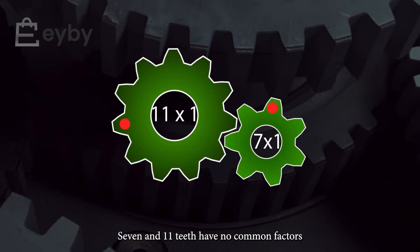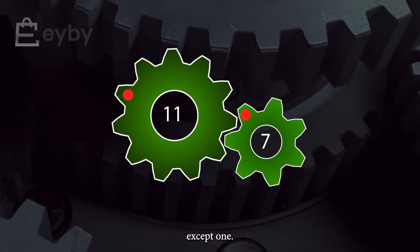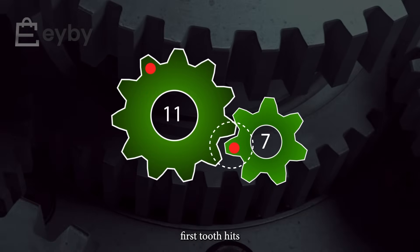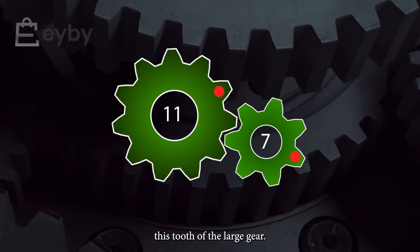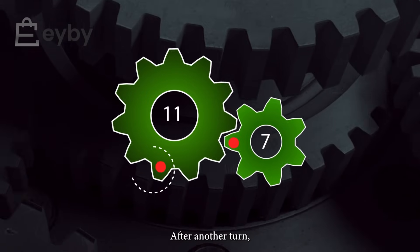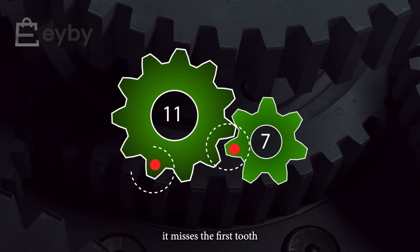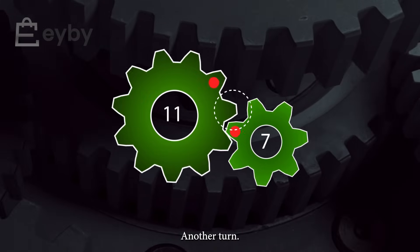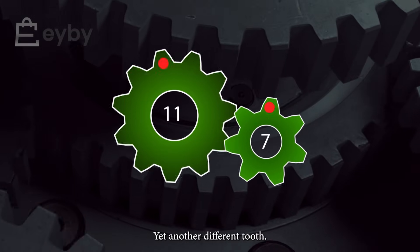In the second pair, 7 and 11 teeth have no common factors except one. After a full turn, the small gear's first tooth hits this tooth of the large gear. After another turn, it misses the first tooth and instead hits a different tooth of the large gear. Another turn, yet another different tooth.